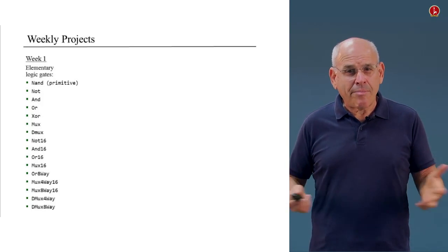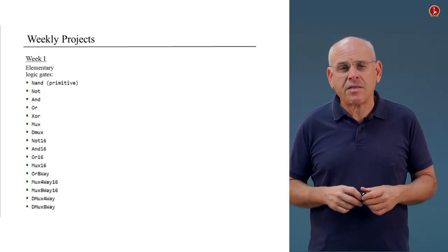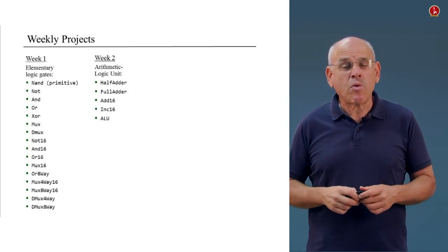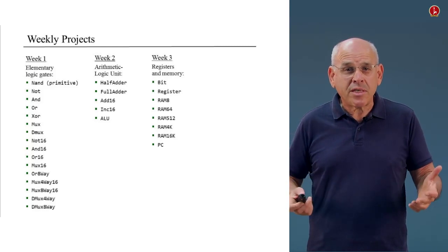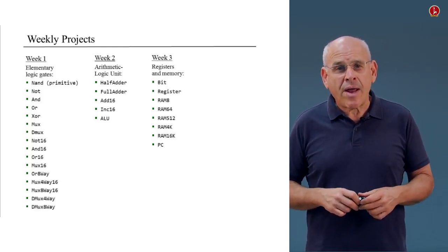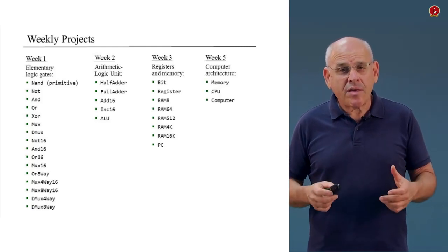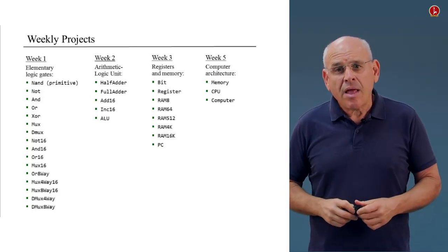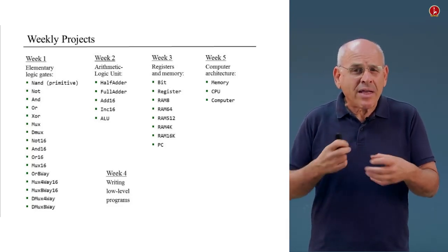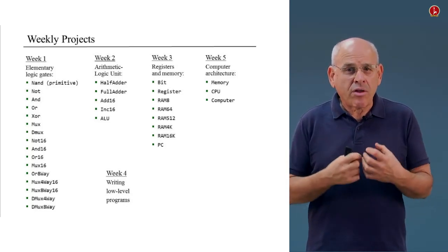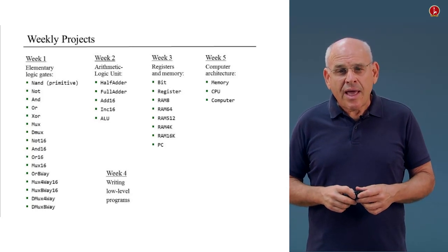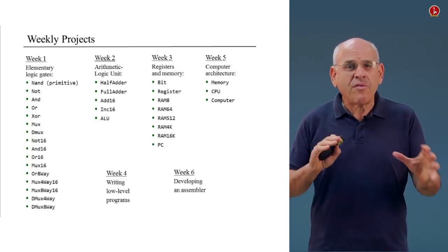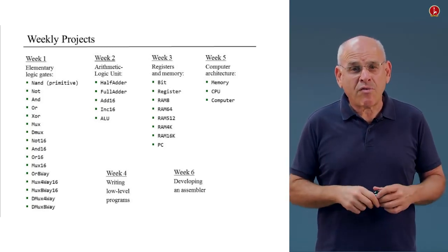In the first week, we're going to build some elementary logic gates — 15 gates altogether, as you see here in the slide. In the second week, we're going to build an Arithmetic Logic Unit, an ALU, which is the centerpiece of the CPU that we will build later. In the third week, we're going to build memory systems, starting with registers and going all the way up to RAM and ROM units. In week four, before we build the computer, we will write some programs in the Hack machine language in order to get the feeling of what this computer is going to do. In the fifth week, we're going to take all the chipset that we built so far and use it to design an actual computer. And in the last week, we're going to introduce an assembler for the Hack machine language and actually develop it in two different ways — one for people who have background in programming, and one for people who don't.